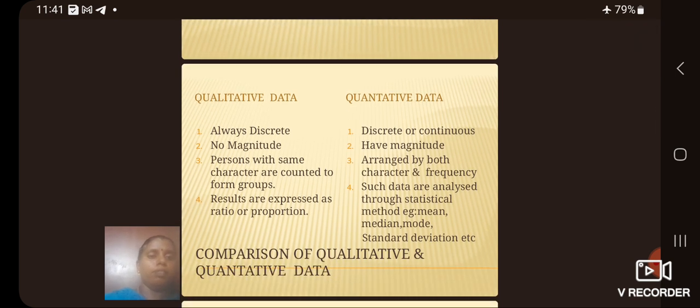This is the difference between qualitative data and quantitative data. Qualitative data is always discrete. Quantitative is discrete or continuous.